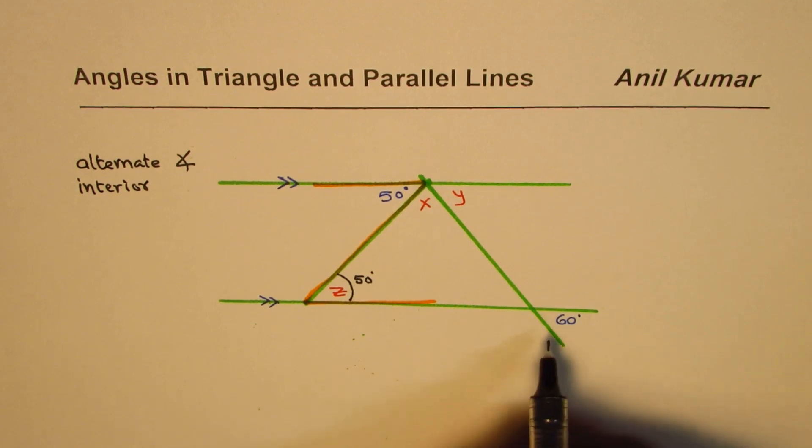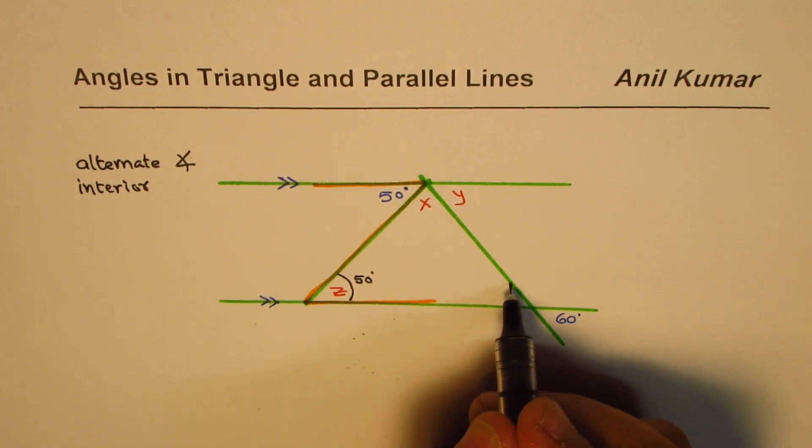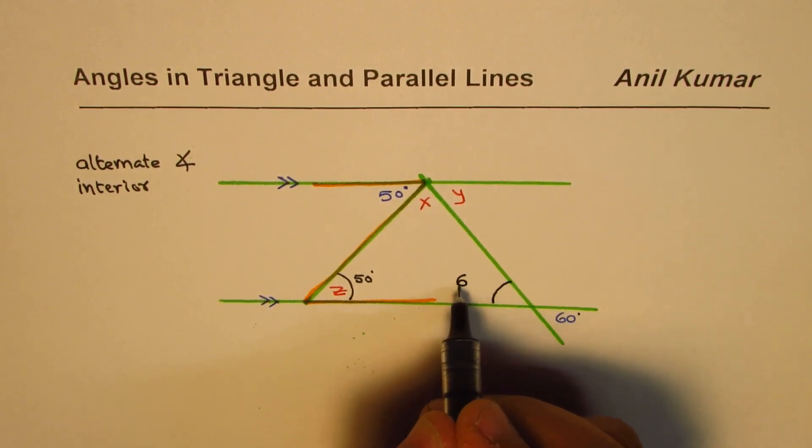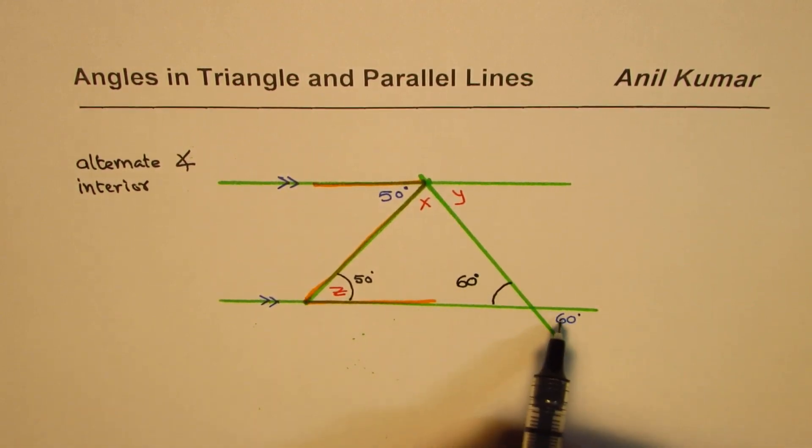Now the other angle given to us is 60 degrees. And vertically opposite angle should be 60 degrees, right? So you could do like this.